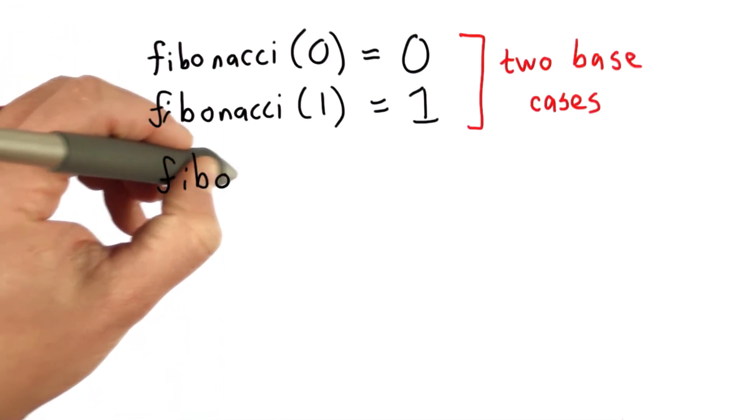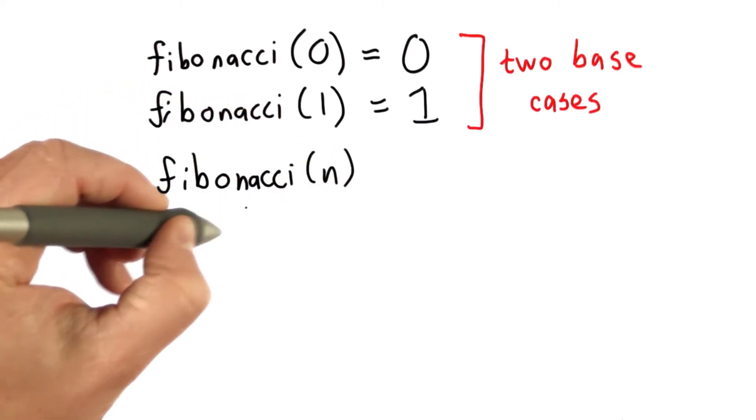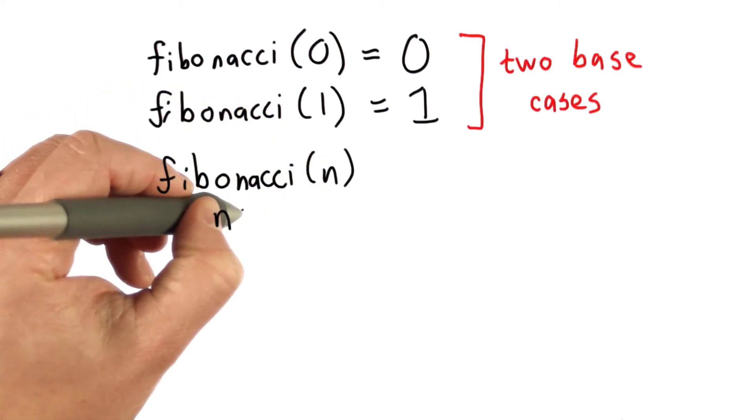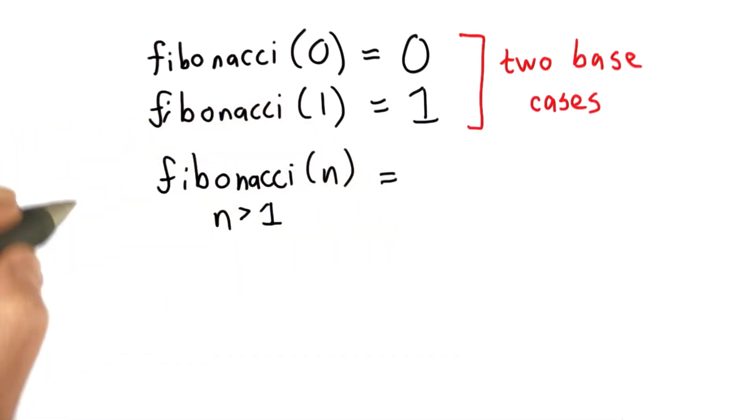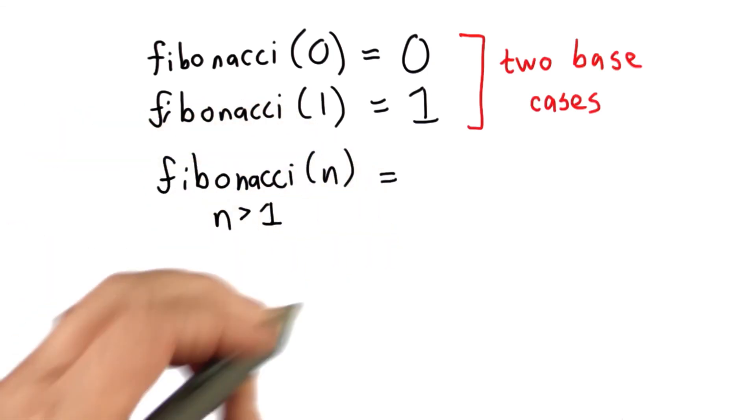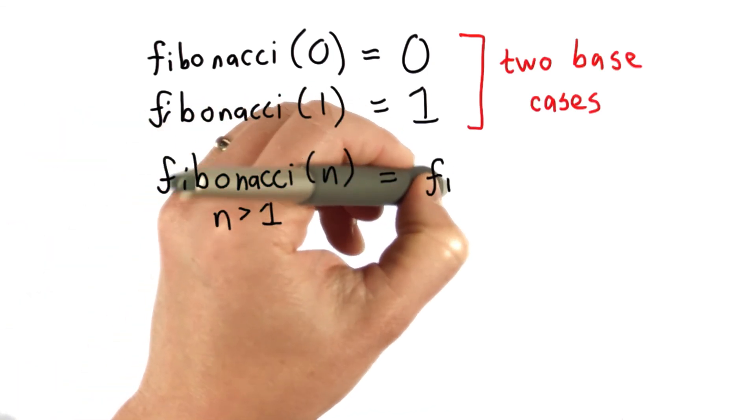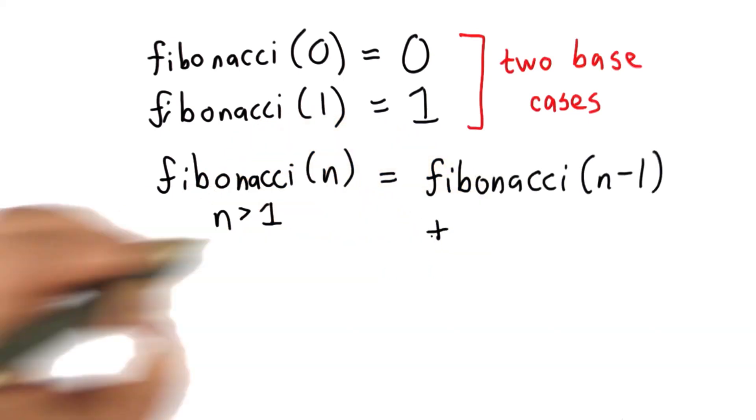We can define every other Fibonacci number recursively starting from these base cases. The Fibonacci number n, where n is some whole number greater than 1, is all the rabbits in the previous month, so that's Fibonacci of n minus 1, plus all the new babies. The number of new babies is the number of rabbits we had two months ago. Those are all the mature rabbits. That gets added to the number of rabbits we had the previous month. This defines every Fibonacci number in terms of the two base cases and the one recursive case.